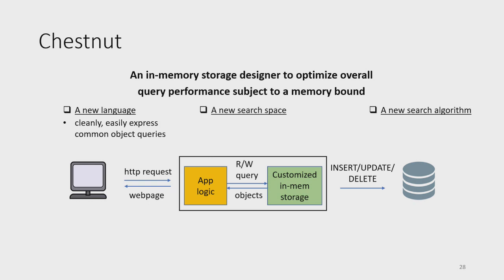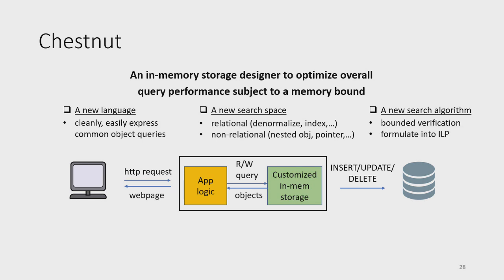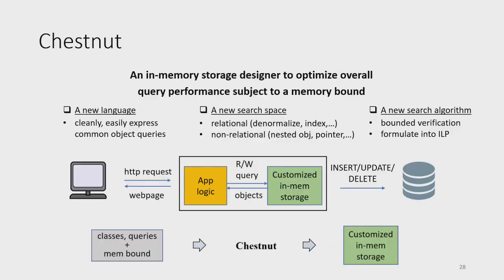This optimization is challenging because you need a new search space and search algorithm. Chestnut proposes a search space exploring both relational and non-relational storage options — normalized tables and indexes in the relational world, and nested objects and pointers in the non-relational world. It devises a new search algorithm using bounded verification to find storage for each individual query, then formulates an ILP to find the sharing of data structures among queries. Developers simply provide classes and queries declared using the Chestnut language plus a memory bound, and Chestnut generates C++ code for both storage and queries.